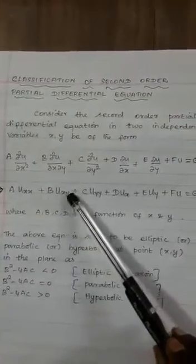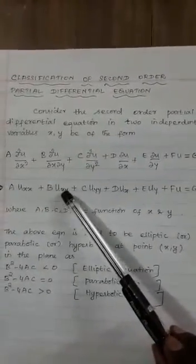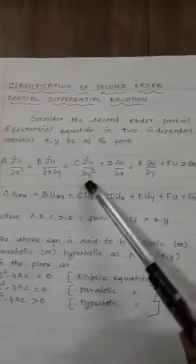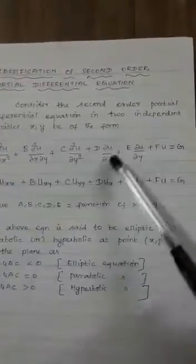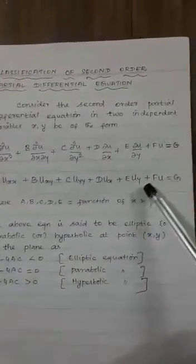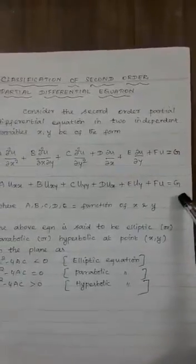Therefore in suffix it should be written as xy, u_xy. Similarly plus C u_yy plus D u_x plus E u_y plus F u equals g.